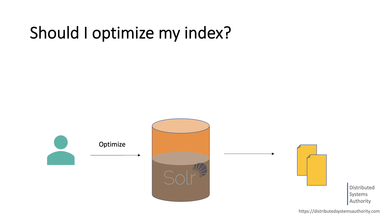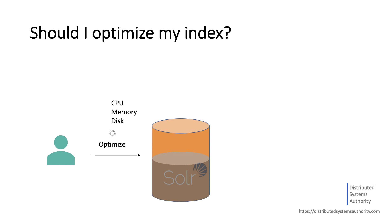However, we should mention that optimizing can be an expensive operation in terms of memory, CPU, or disk IO, particularly for large indexes. It's not uncommon for a full optimization to take hours for a large index. After version 7.5, there were some major improvements, and optimize and force merge behave better, but it is still an expensive operation.